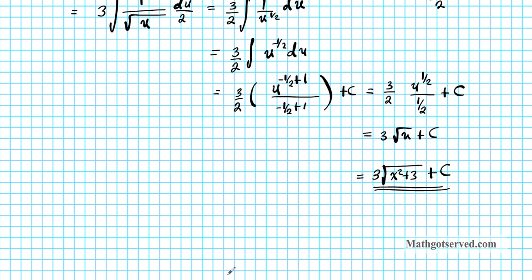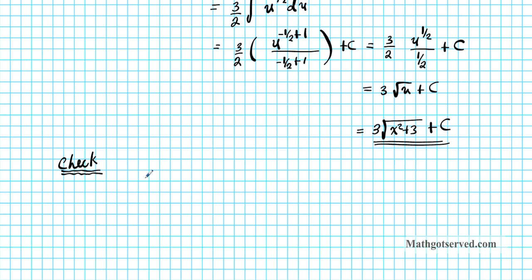Is our answer right or wrong? Let's do a check to make sure our answer is correct. We verify by performing the inverse procedure, which is differentiation. If we differentiate our result and end up with the original integrand, we're confident that our result is correct. Let's go ahead and differentiate: d/dx of 3 times the square root of x squared plus 3, plus c.